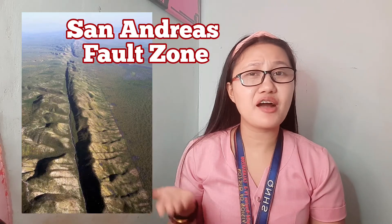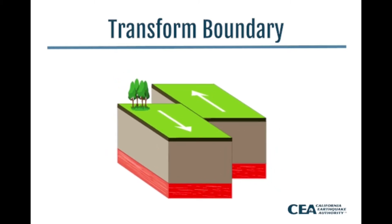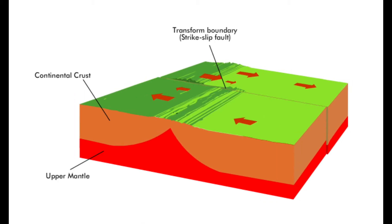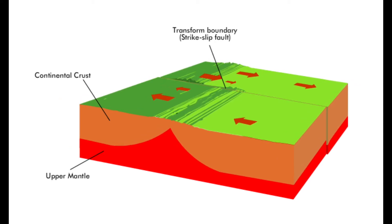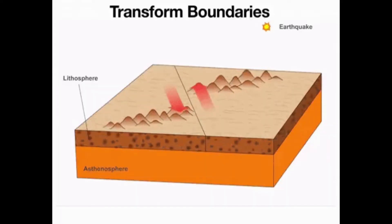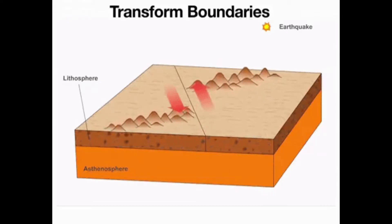One of the most famous transform plate boundaries occurs at the San Andreas Fault, which extends underwater. Natural or human-made structures that cross a transform boundary are offset, split into pieces, and carried in opposite directions. Rocks that line the boundary are pulverized as the plates grind along, creating a linear fault valley or undersea canyon. Earthquakes are common along these faults. In contrast to convergent and divergent boundaries, crust is cracked and broken at transform margins but is not created or destroyed.